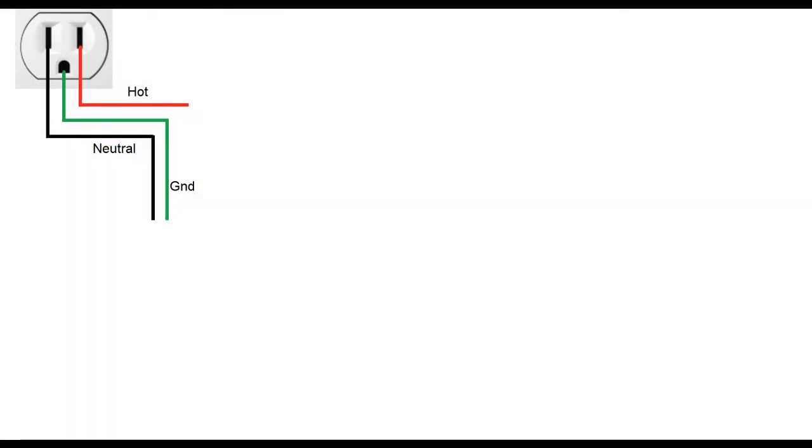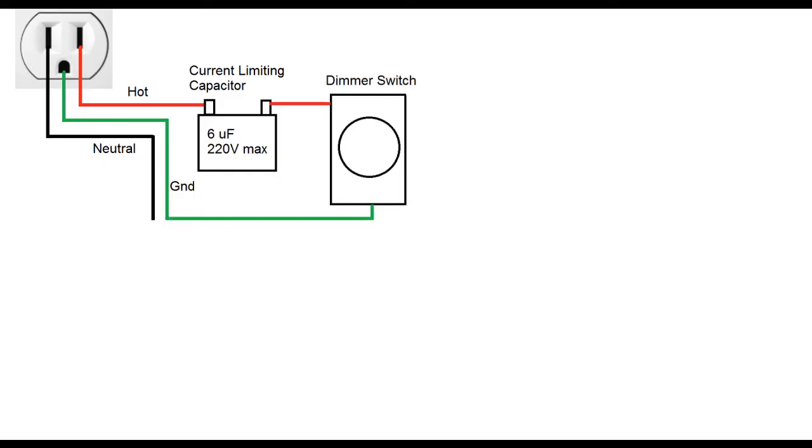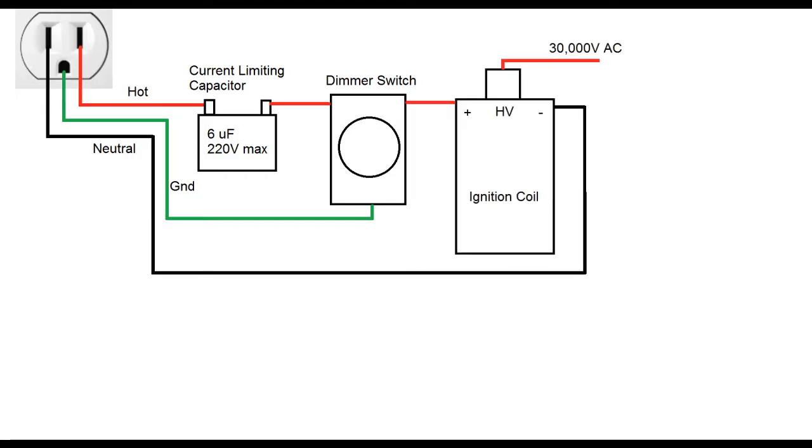The system is powered from a 110V outlet. The hot line goes into a capacitor that serves as a current limiter, and from there it goes to a dimmer switch to allow for power adjustments. The output of the dimmer switch feeds into an ignition coil, which is what produces the high voltage, about 30,000 volts.